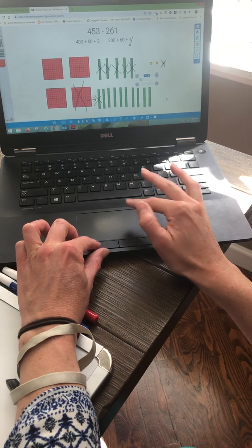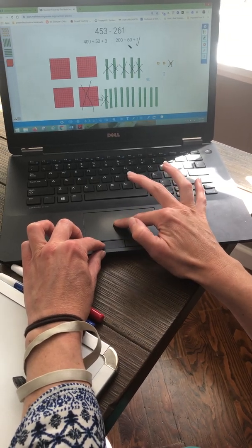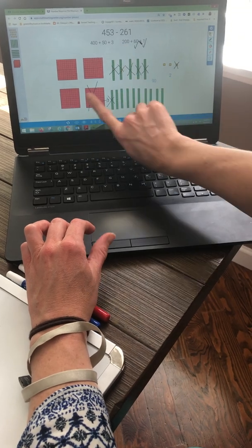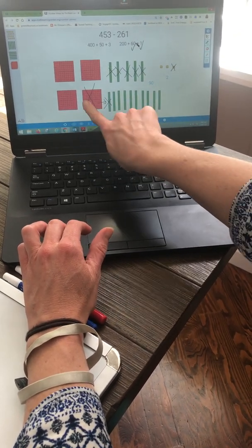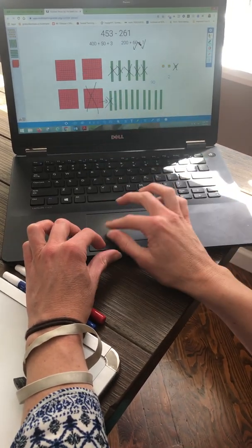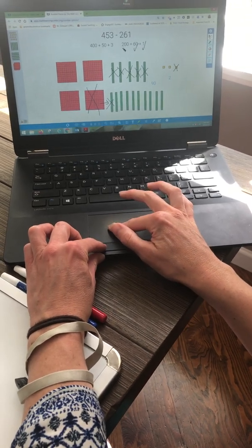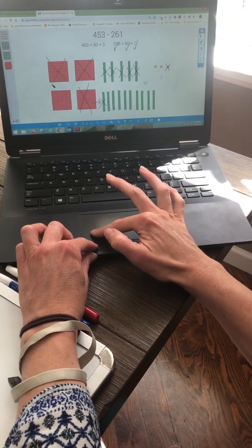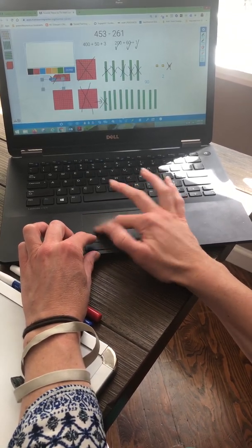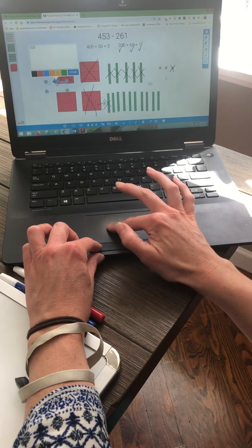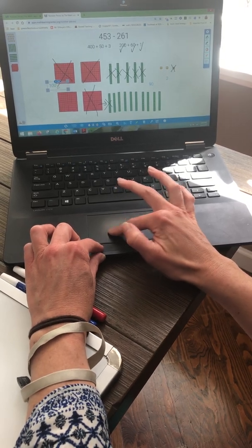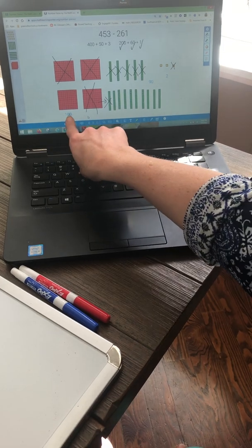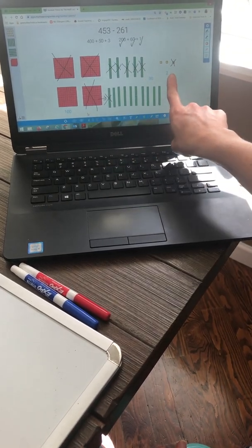All right, it's time for my hundreds. I need to take away 200. I can't count this hundred. This hundred has already been taken away because we had to exchange it for 10 rods. So I'm going to take away 100, 200. I am left with 100. So my answer to this problem or the difference is 192.